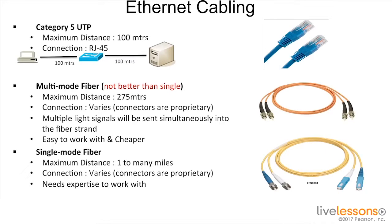There are limitations to Category 5 unshielded twisted pair cable. The maximum transmission distance is 100 meters or around 300 feet, and it uses a connection type called RJ45. For this reason, there are other media types available called fiber.